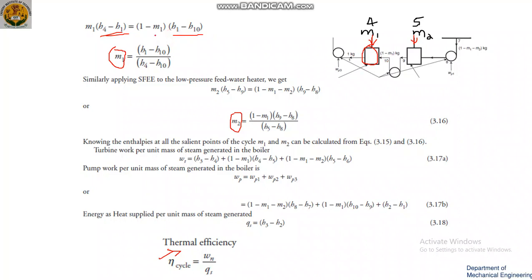M1 amount of fluid is coming through this stage. For the low pressure feed water heater, M2 into (H5 minus H9), because H5 is greater than H9, equals (1 minus M1 minus M2) into (H9 minus H8). So energy lost by the fluid is equal to energy gained by the fluid, giving us M2.